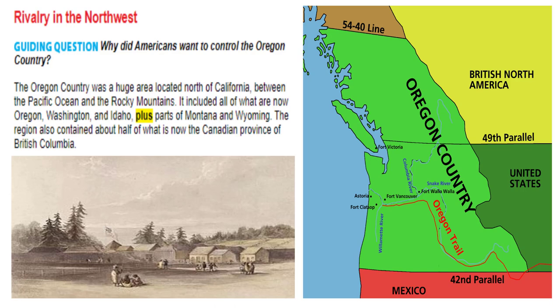Rivalry in the Northwest. The Oregon Country was a huge area located north of California between the Pacific Ocean and the Rocky Mountains. It included all of what are now Oregon, Washington, and Idaho, plus parts of Montana and Wyoming. The region also contained about half of what is now the Canadian province of British Columbia, and you can see that pictured here on what back then was called Oregon Country.